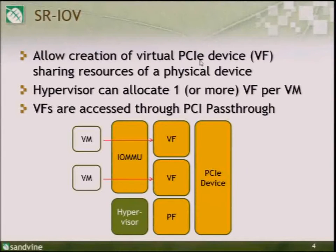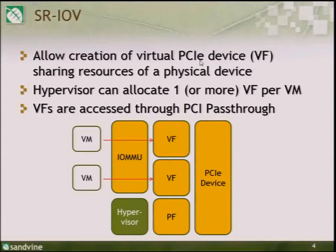With SR-IOV, because we have the PF device controlled by the hypervisor, the PCI device can add security functionality, and through the PF driver the hypervisor can configure and limit what the VMs can do. This is very important because in certain environments you want to potentially capture all packets or spoof MAC addresses — it's a legitimate use case in some scenarios — so you want that flexibility while still being able to restrict it when needed.